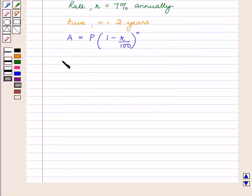This implies A is equal to 500,000 into 1 minus 7 upon 100 raised to power 2 where A is the population after 2 years.